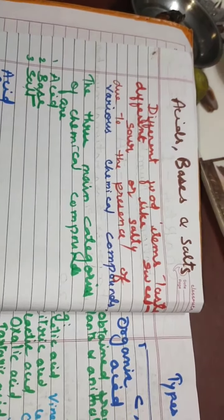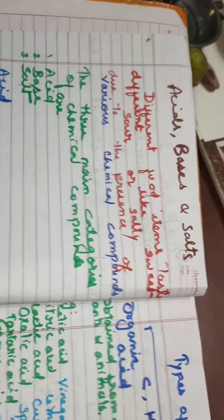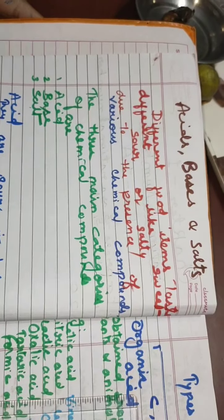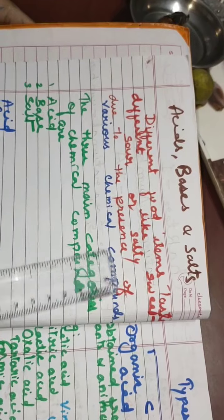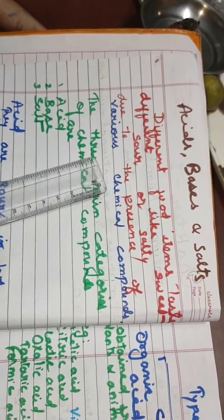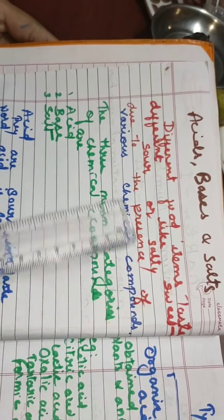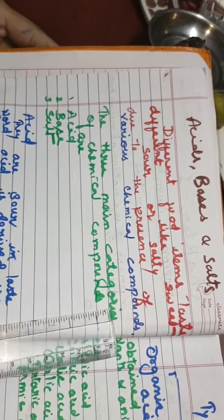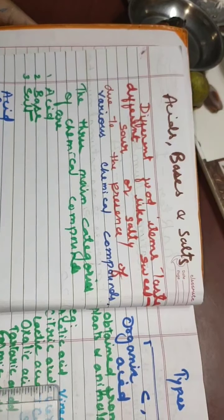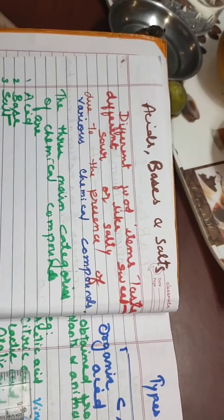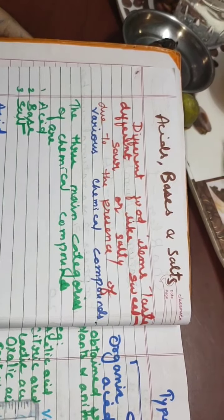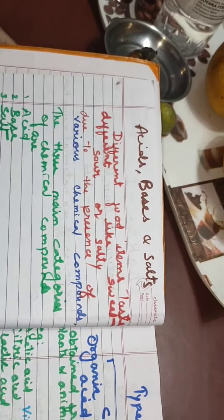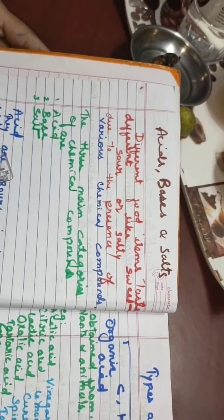Good morning students, today we are going to start the second chapter of class 7 chemistry: acid, bases and salts. As we know that different food items taste different like sweet, sour or salty due to the presence of various chemical compounds. The three main categories of chemical compounds are acid, base and salt.